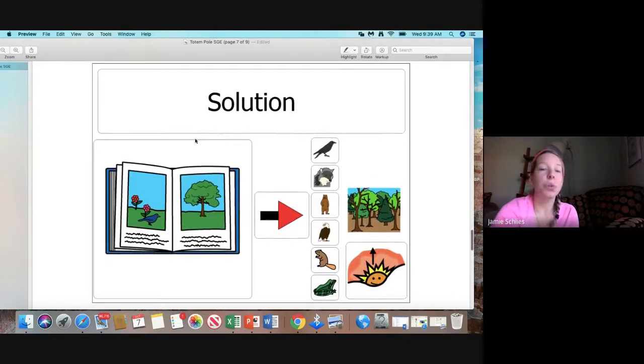What was their solution? The solution was when Raven said, Hey, you know what? We told a story. And our story is the order of which we sit on the totem pole. So once Raven remembered that they told a story, they were able to get in the correct order on the totem pole.